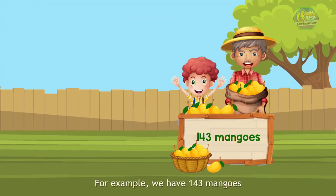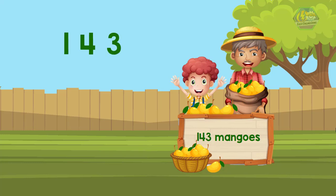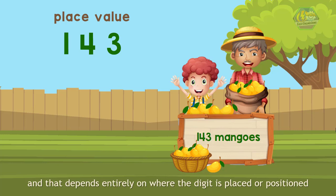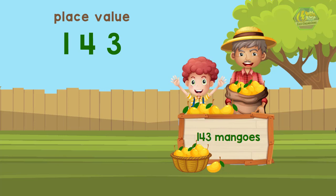For example, we have 143 mangoes. The number 143 is made up of three digits: 1, 4, and 3. Each digit has a place value that depends entirely on where the digit is positioned.